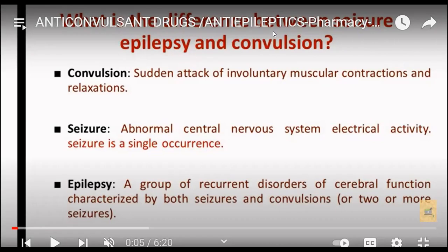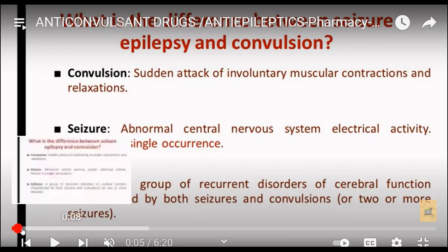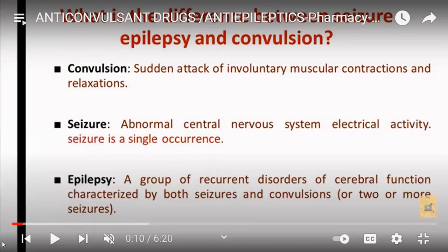Before starting with other drugs, we are going to study the difference between convulsion, seizure, and epilepsy. Convulsion means sudden attacks of involuntary muscle contraction and relaxation. Seizure means abnormal central nervous system electrical activity, and it is the occurrence of a single thing. Epilepsy is the recurrent disorder — meaning the same disorder is repeating — and it is characterized by both seizures and convulsions, or more seizures can be termed as epilepsy.